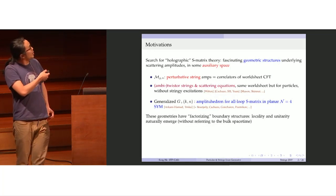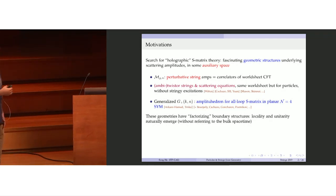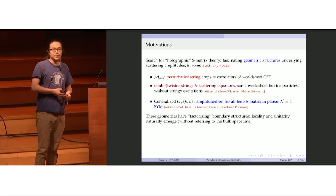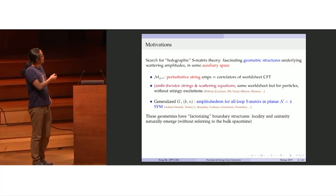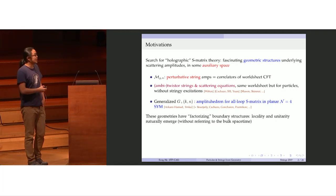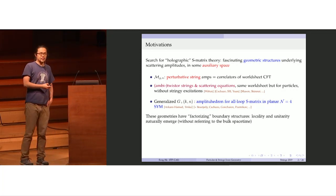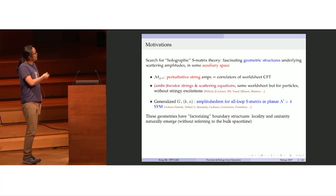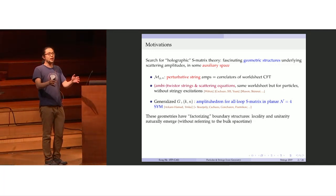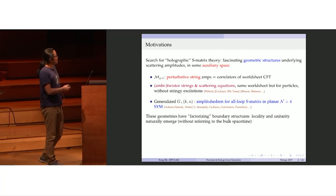The search for some holographic S-matrix theory has led to discoveries that there are a number of fascinating geometric structures underlying scattering amplitudes, all in some auxiliary space. The most famous example is the moduli space of perturbative string theory, where we compute string amplitudes using CFT correlators on this geometric object. In the program of twistor strings and scattering equations, we use the same world sheet geometry, but now only for particle scattering without any stringy excitations. All these geometries have something in common: they have this factorizing boundary structure, meaning their boundary looks like products of geometries of the same kind. This is where the locality and unitarity of scattering amplitudes naturally emerge from geometries without ever referring to the bulk space-time.